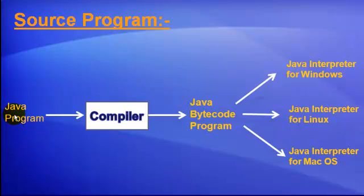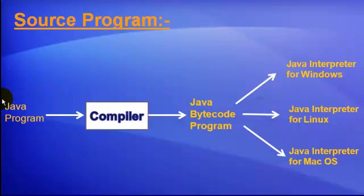If there are some syntax errors, then the compiler accordingly lets us know about that. Once the errors are rectified or the program is made error-free, then the compiler converts our source programs into Java bytecodes.